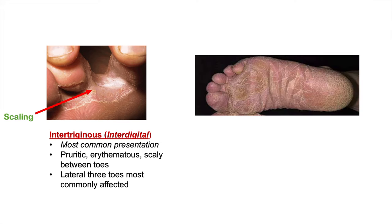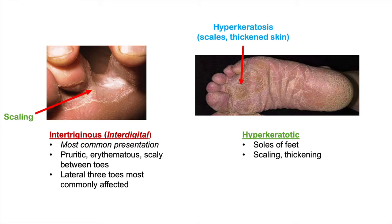The second type is hyperkeratotic tinea pedis, which affects the soles of the feet and causes scaling and thickening of the skin. Hyperkeratosis means an abnormal condition of excessive keratin — hyper meaning a lot, kerat referring to keratin, and osis meaning an abnormal condition — resulting in thickened, scaly skin on the soles of the feet.